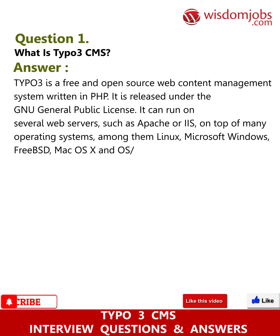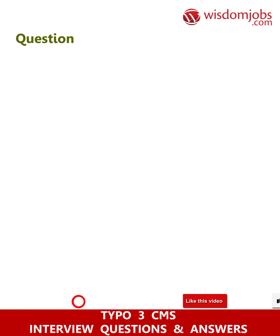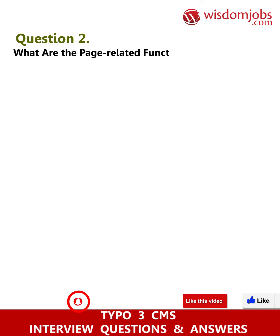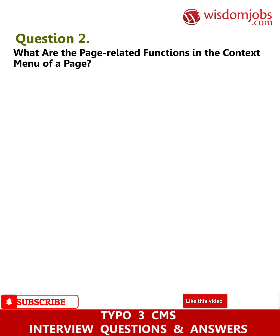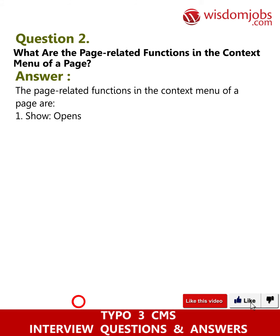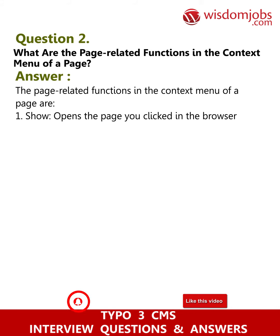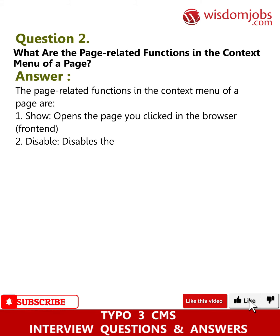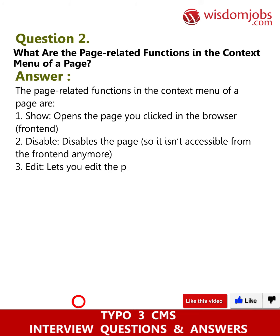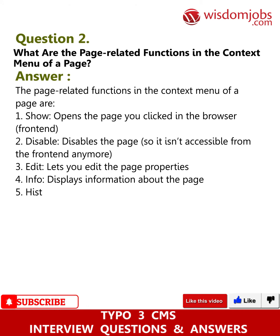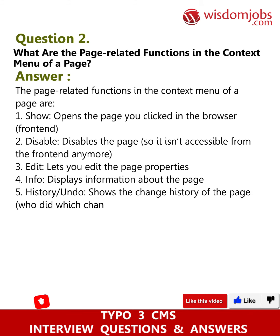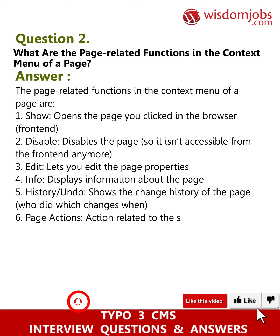Question 2: What are the page-related functions in the context menu of a page? Answer: The page-related functions are: 1. Show - opens the page in the browser front-end; 2. Disable - disables the page so it isn't accessible from the front-end anymore; 3. Edit - lets you edit the page properties; 4. Info - displays information about the page; 5. History/Undo - shows the change history of the page, who did which changes and when.